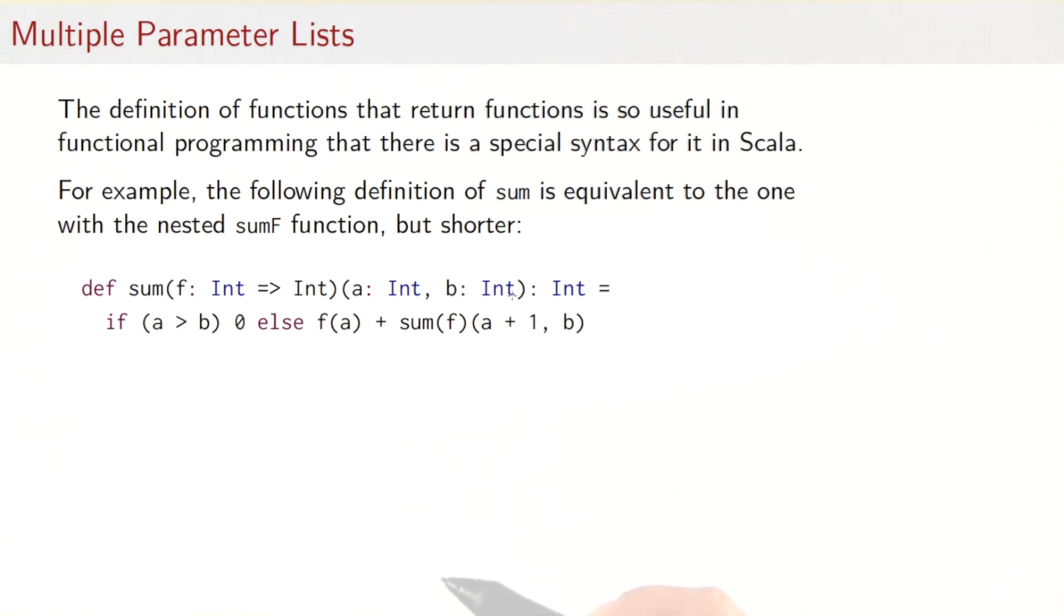You might ask, well, what's the point of doing it that way instead of simply writing the function with three parameters like we did at the beginning? Well, the idea is that if you do that, then actually you can write sum of, let's say, cube separately. That's a valid expression by itself. And you can avoid passing the other arguments. They will arrive in a different parameter list that can be applied later on in a different context.